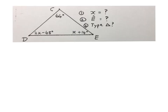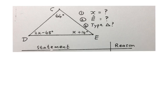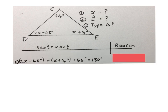The next exercise looks like this. They give us triangle CDE and tell us that one angle is 64 degrees, another is 2X minus 48 degrees, and another is X plus 14 degrees. They ask us to calculate the value of X, find the size of angle E, and determine what type of triangle it is. We add up all these values and equate them to 180 degrees. Reason: interior angles of a triangle.